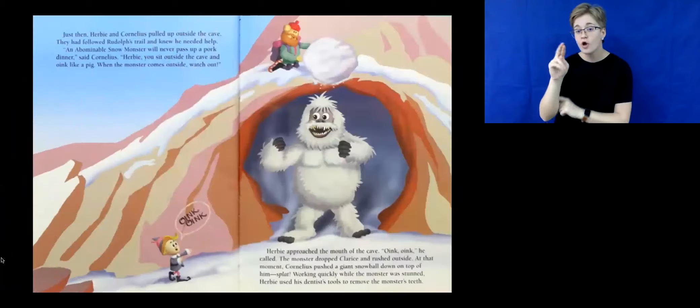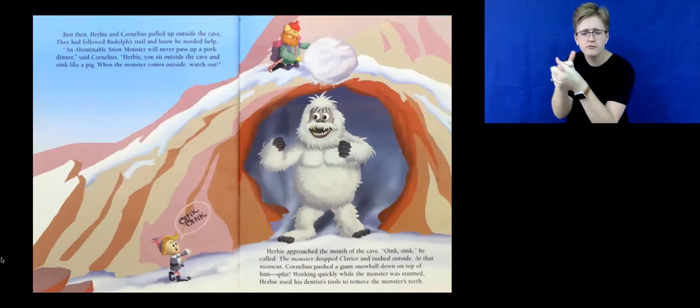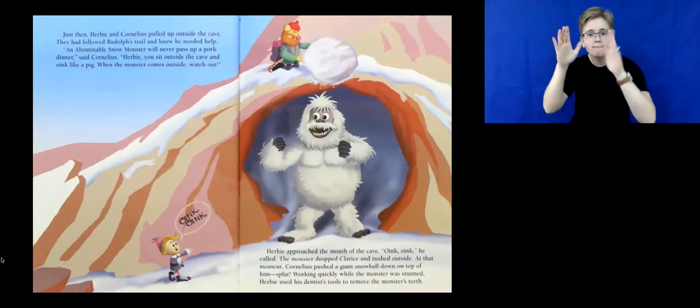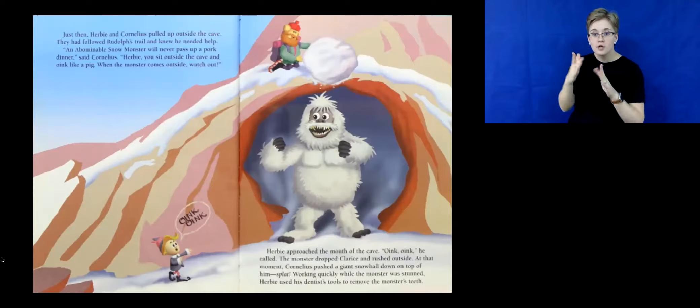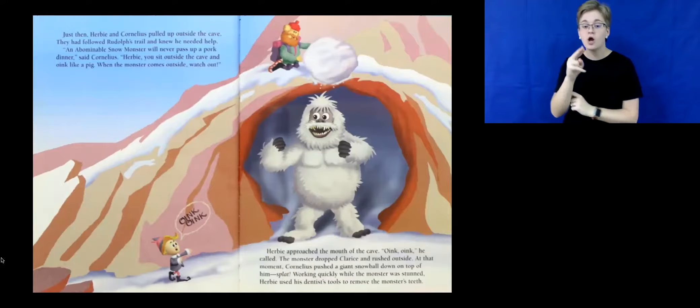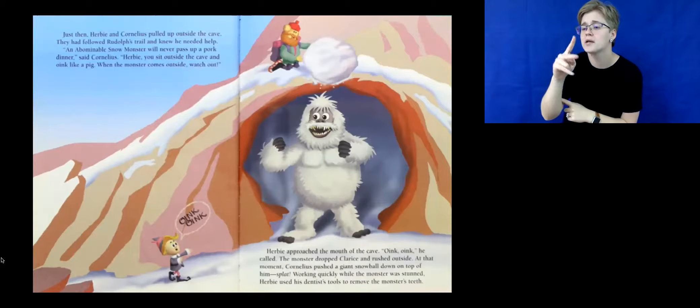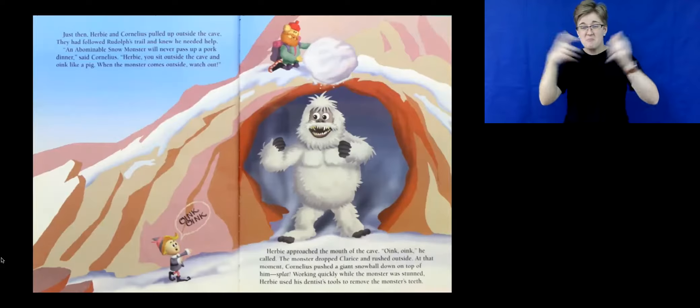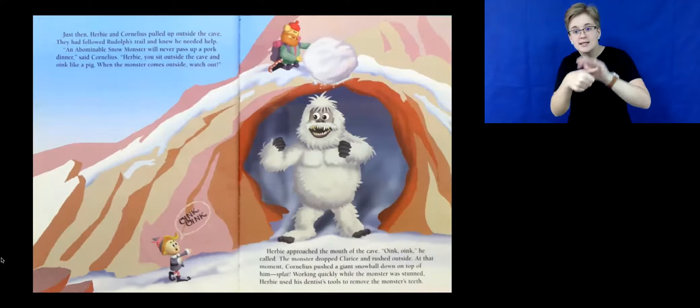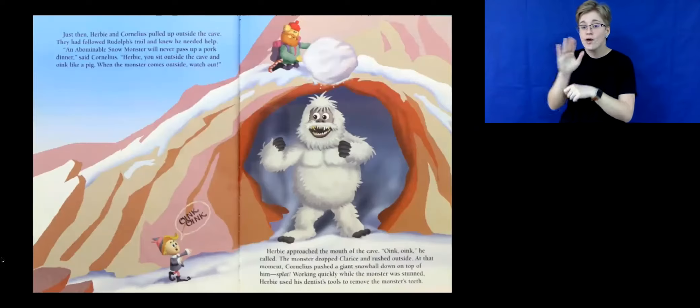Just then, Herbie and Cornelius pulled up outside the cave. They had followed Rudolph's trail and knew he needed help. An abominable snow monster will never pass up a pork dinner, said Cornelius. Herbie, you sit outside the cave and oink like a pig. When the monster comes outside, watch out! Herbie approached the mouth of the cave. Oink! Oink! he called. The monster dropped Clarice and rushed outside. At that moment, Cornelius pushed a giant snowball down on top of him. Splat! Working quickly while the monster was stunned, Herbie used his dentist's tools to remove the monster's teeth.